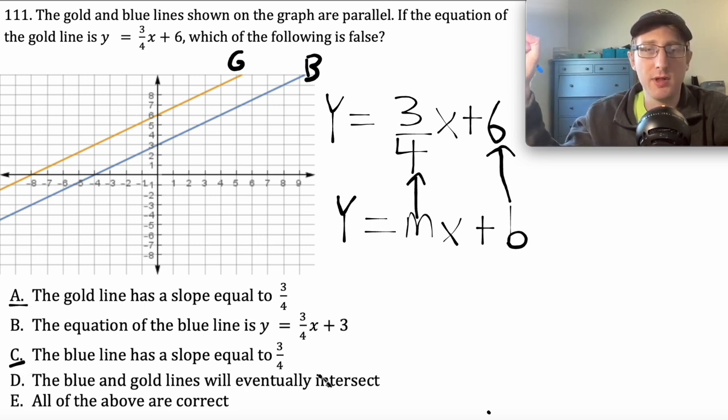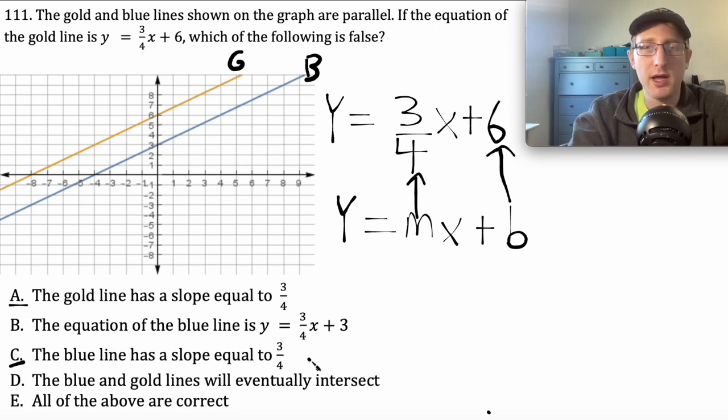So what about b? The equation of the blue line is y equals 3 over 4x plus 3. How can we tell if that's true or false? Well, we know that both lines are going to have the same slope. So the first part looks pretty good because we know that the blue line equation is going to have y equals 3 over 4x. This 3 right here, that's the y-intercept. We have to confirm, does the blue line have 3 as the y-intercept? Well, we can just look at the blue line and see that it crosses the y-axis at 3. So b looks correct.